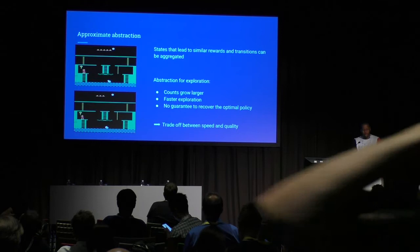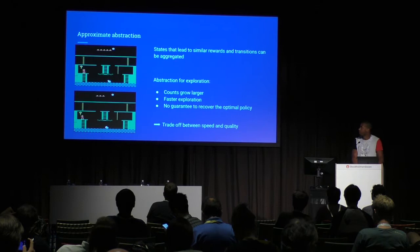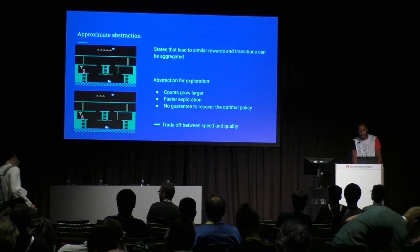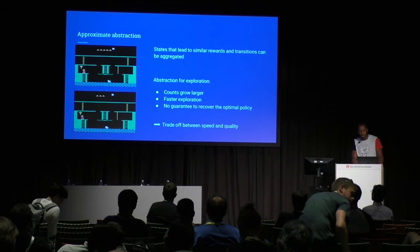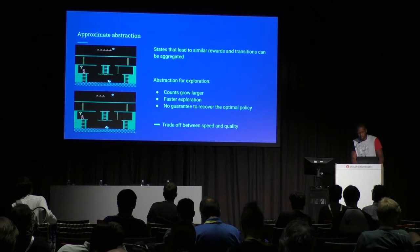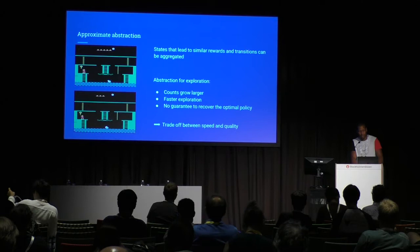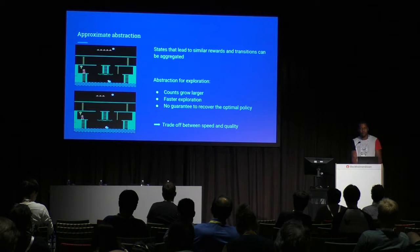We advocate for state abstractions. Looking at two images that don't match exactly in pixel space, you should apply the same action leading to the same reward — getting the key. The idea behind state abstractions is to cluster together states that lead to similar rewards and transitions. We found that when using an abstraction for exploration, counts grow larger as the abstraction becomes coarser, allowing faster exploration — but you lose any guarantee of recovering the optimal policy. This lets you trade off between speed and quality.